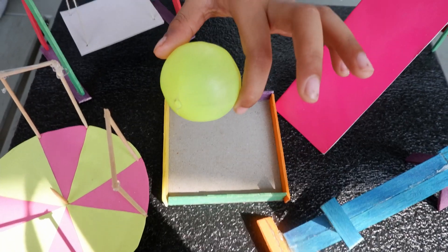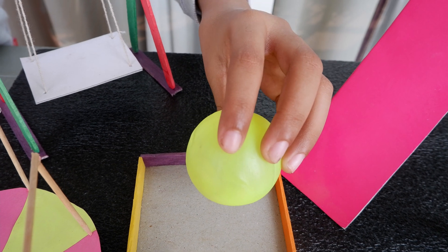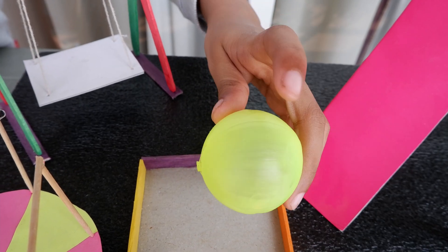Look at this ball. It is shaped like a sphere. It has zero vertices, zero edges and one curved face.